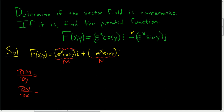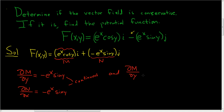We're thinking of the first component as M, so computing ∂M/∂y. We're treating e to the x as constant, so the derivative of cosine is negative sine, giving us negative e to the x sine y. Now computing ∂N/∂x — treating sine y as constant, the derivative of e to the x is just e to the x, so we get negative e to the x sine y. Both of these are continuous, and ∂M/∂y equals ∂N/∂x.